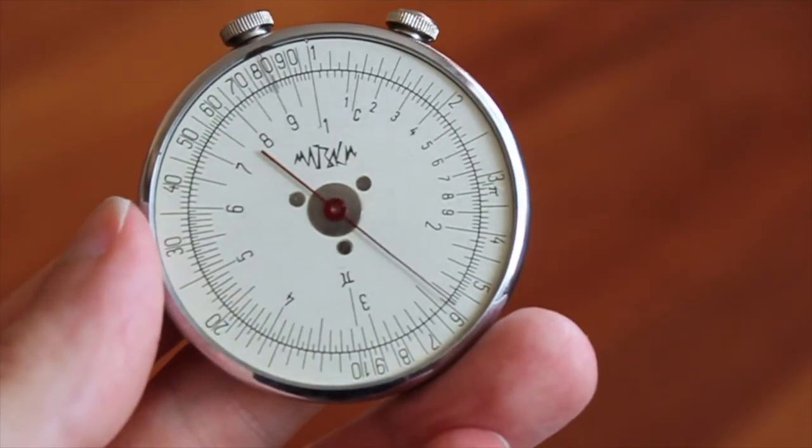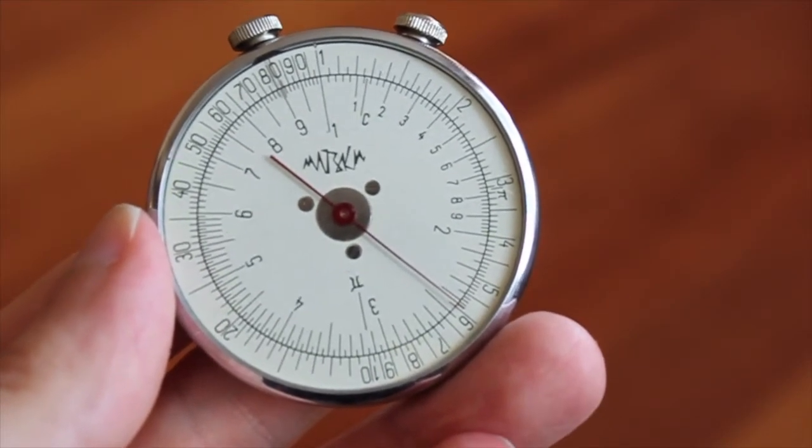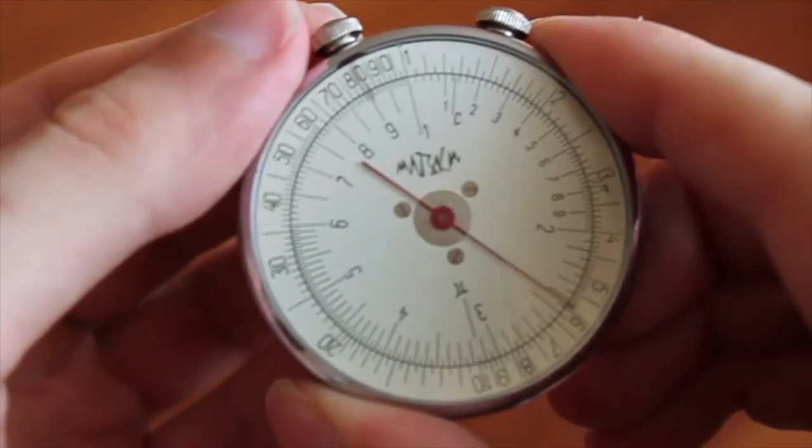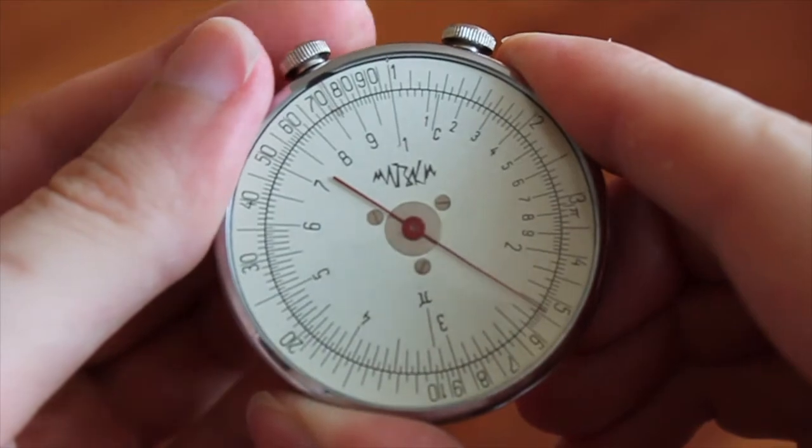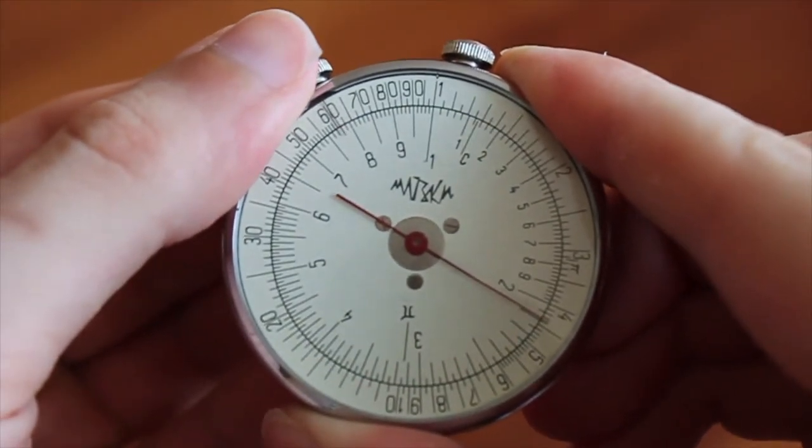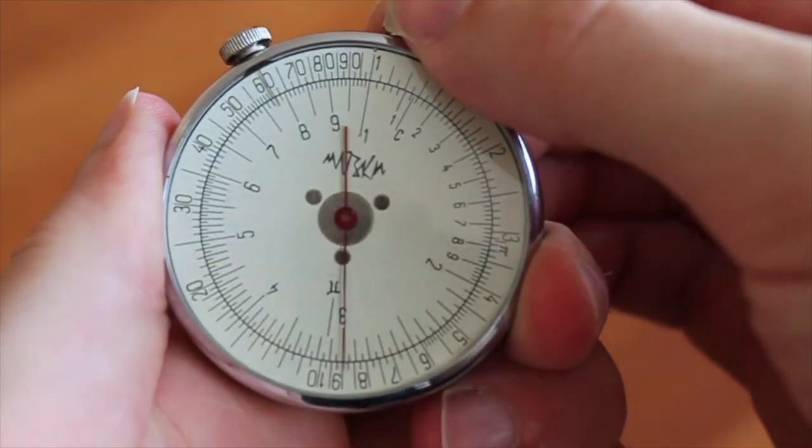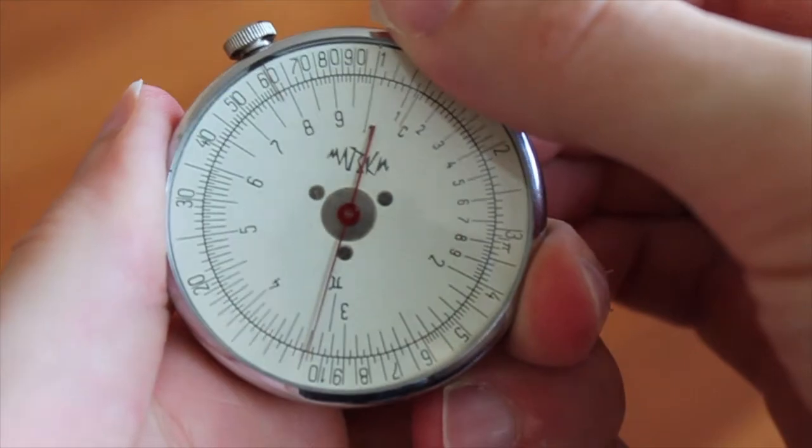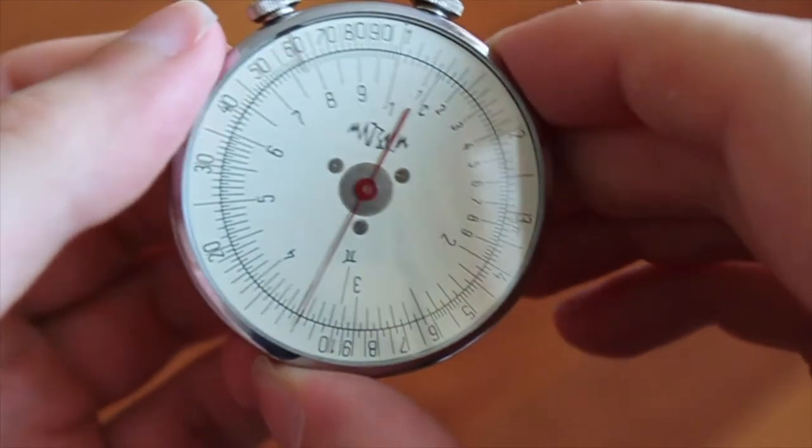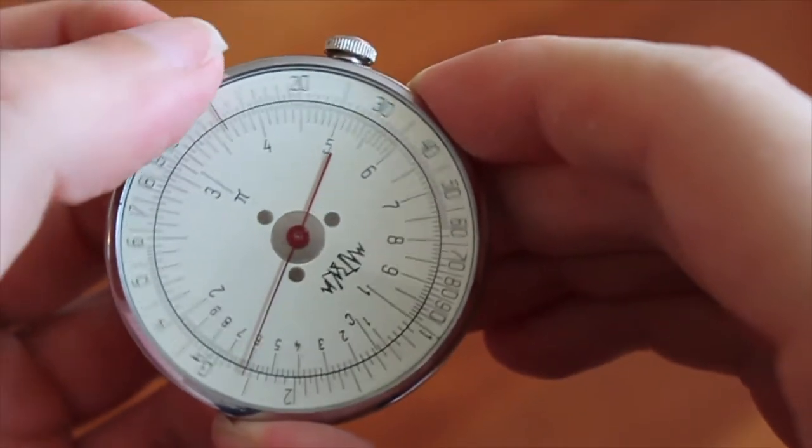And division is just the reverse of multiplication. So, if we want to calculate something like 60 divided by 12, what do we do? We put this guy at 60, and we put the arrow at 12, 10, 11, 12,